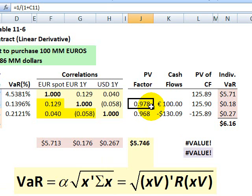Now we have the cash flows. This is the instrument: a one-year forward contract to purchase 100 million euros in exchange for 130 million US dollars. These two cells describe the instrument. This column in Table 11-6 is a way to get to diversified VaR and shows our mapping logic.